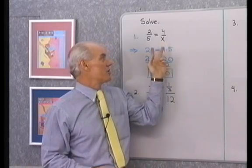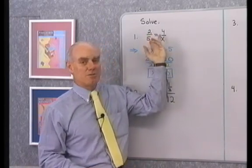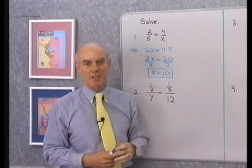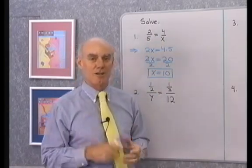Here, I have x over here. It's just going to be the product of the extremes is equal to the product of the means. I chose to put the 2x over here first, because I like to have x on the left side of the equation. Let's look at another one of these problems.